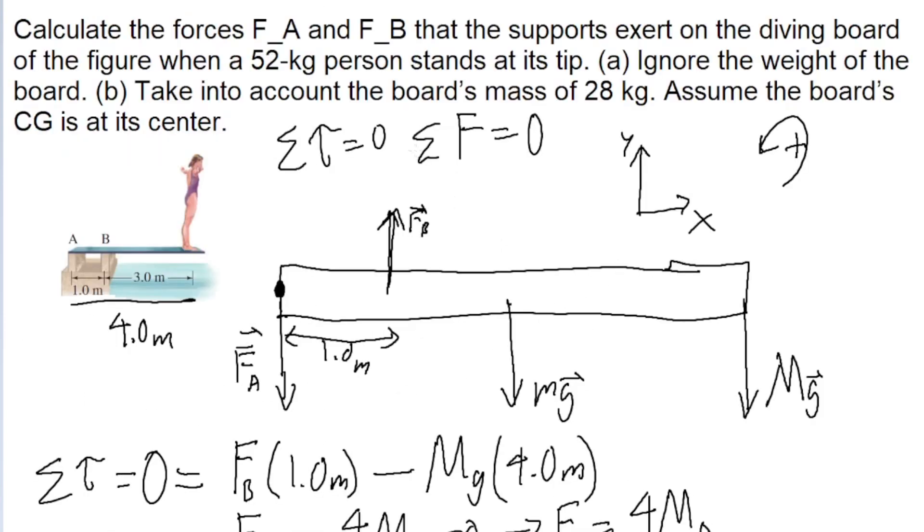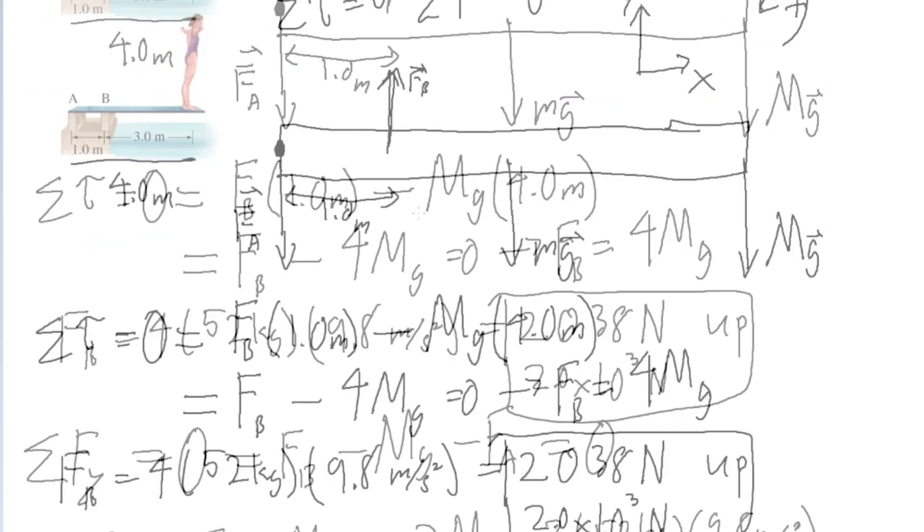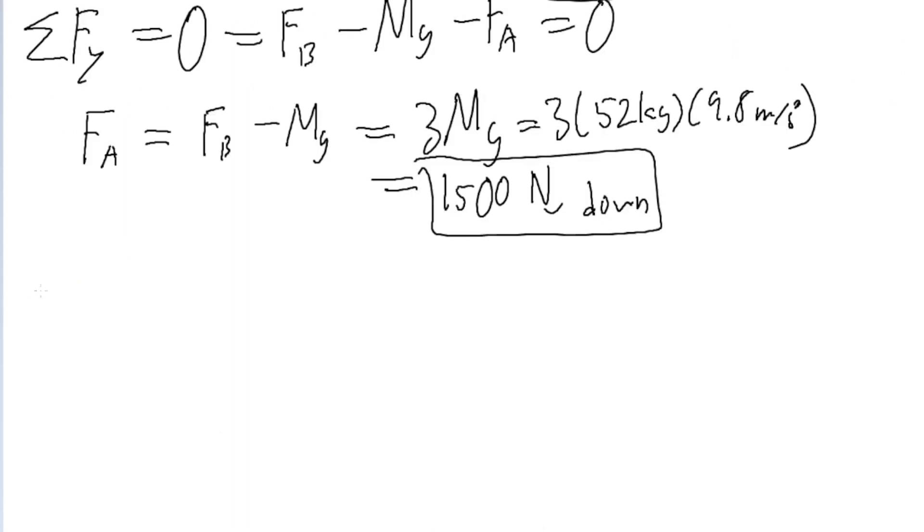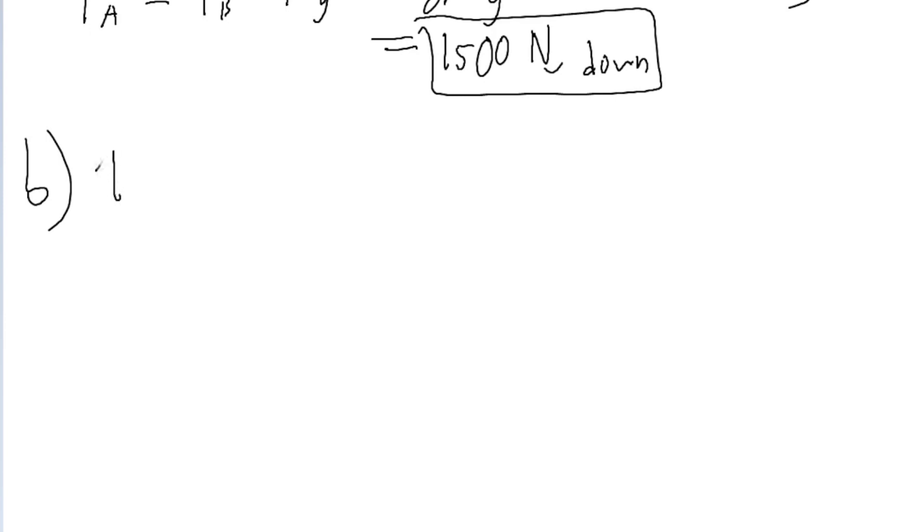But part b gets a little trickier, because now we are asked to take into account the board's mass. And we're even given its mass, so that's pretty nice. But yeah, this is going to get a little more complicated. We're basically going to repeat the exact same process, except now we're going to take into account the small mg. So the net force is once again going to be zero. But now we got a new term in the mix.